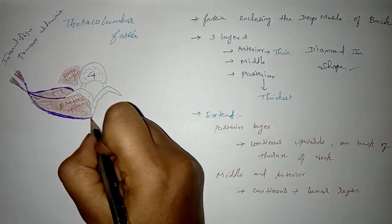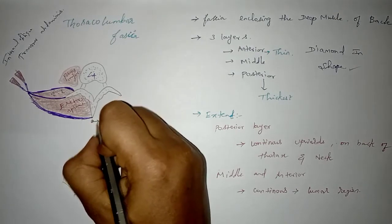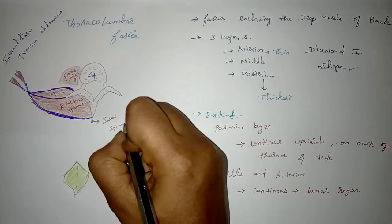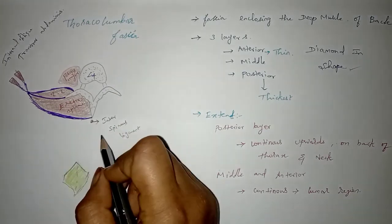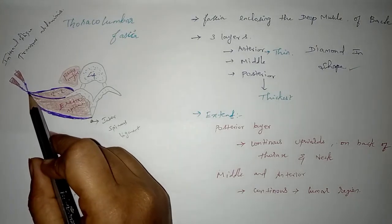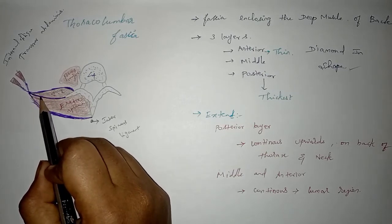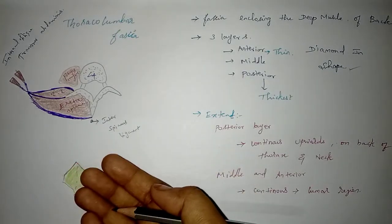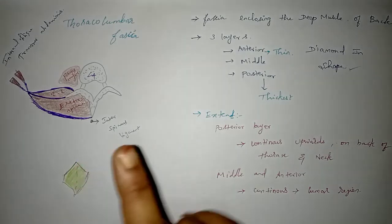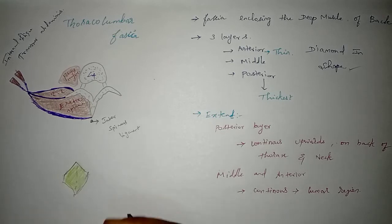Laterally, the posterior layer is attached to the middle layer and lateral border of quadratus lumborum. Superiorly it is attached to the back of the thorax, and inferiorly it is attached to the posterior one-fourth of the outer lip of the iliac crest. These are all the posterior layer attachments.